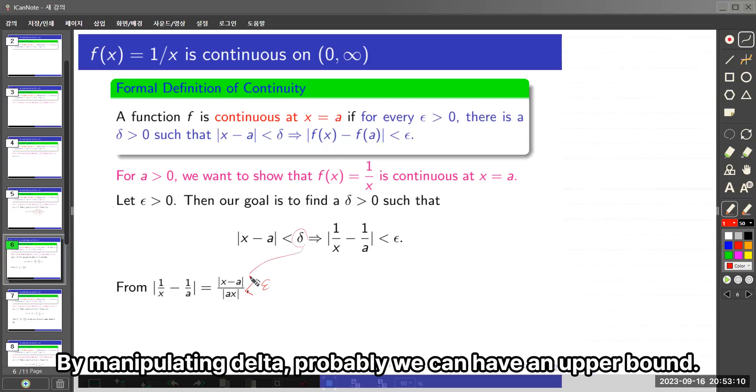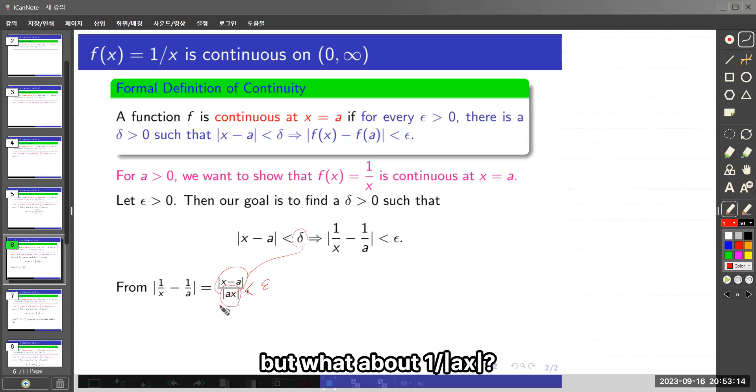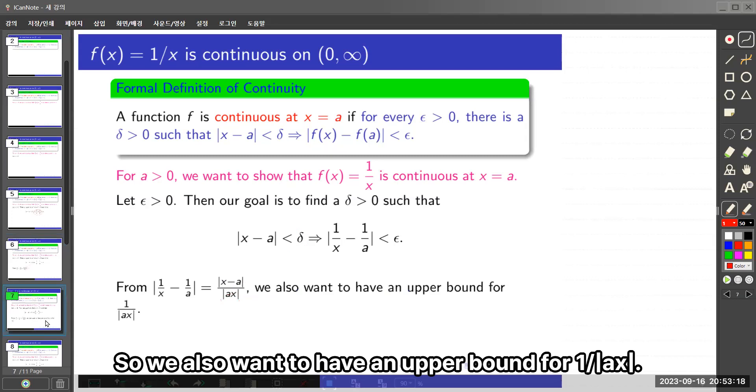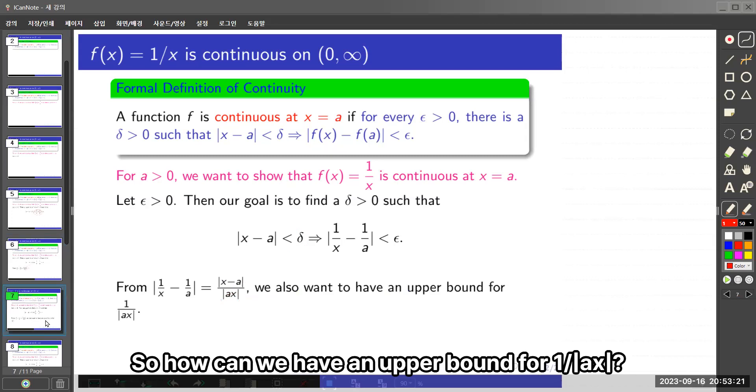By manipulating delta, we can have an upper bound. But what about 1 over absolute value ax? We also want to have an upper bound for 1 over absolute value ax. So how can we have an upper bound for 1 over absolute value ax?